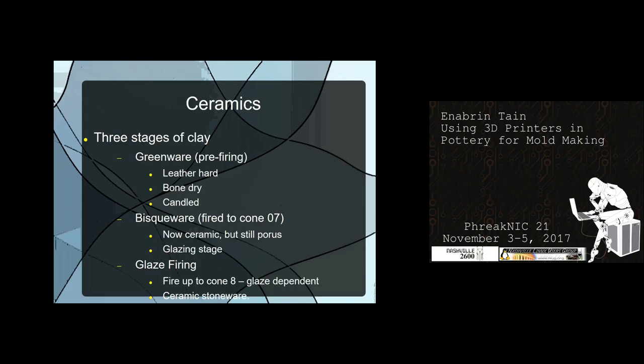With cheaper kilns — like if you buy a kiln on Craigslist — it's going to be controlled by a cone and won't have anything special like that. The candling phase is very important, unless you enjoy vacuuming ceramic shards off the bottom of your kiln. The cone is a physical cone of material that has been calibrated to melt at target temperatures. There's a bar that will drop down when the cone melts — it's on a pivot and releases a latch, which breaks the circuit and cuts off the kiln.